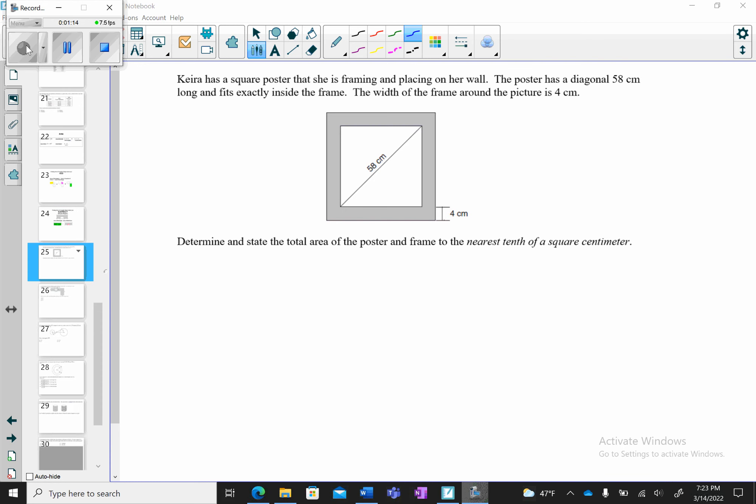Let's take a look at this example. Kira has a square poster that she is framing and placing on her wall. The poster has a diagonal 58 centimeters long and fits exactly inside the frame. The width of the frame around the picture is 4 centimeters. Determine and state the total area of the poster and frame to the nearest tenth of a square centimeter.